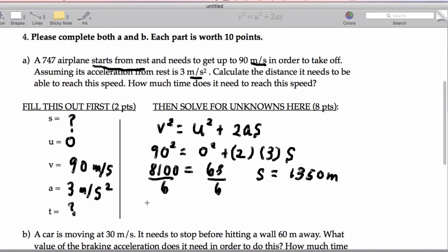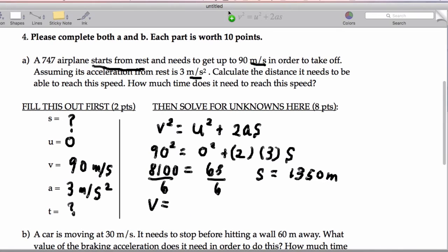Now let's go ahead and get the time, so we have v equals at plus u. That's going to be 3 times t plus u which is zero, and v itself is going to equal 90.